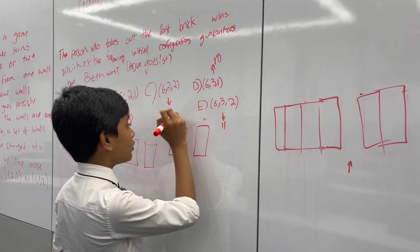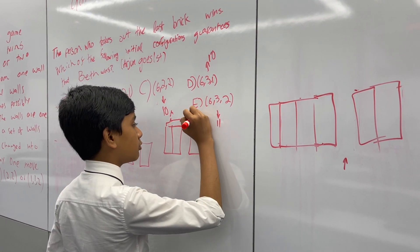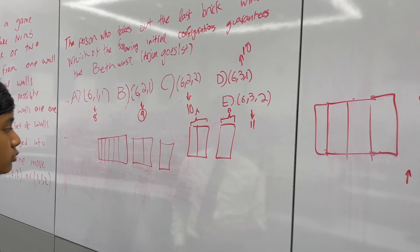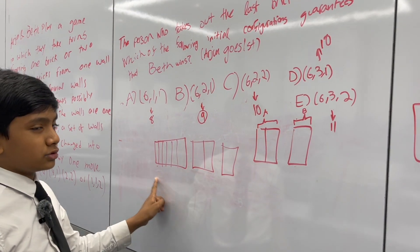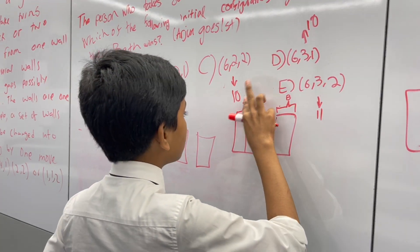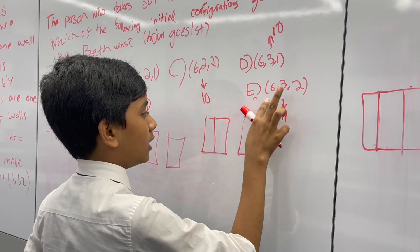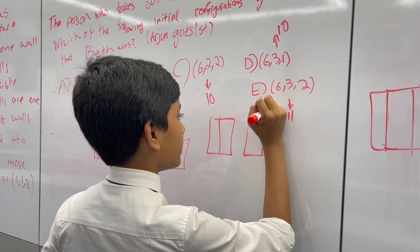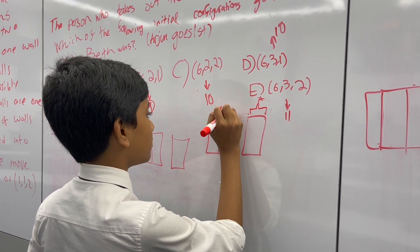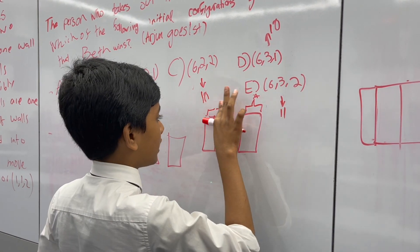Arjun at first is like, aha, I can take these two bricks. But then Beth takes this last brick, and then Arjun has to go first here, and he gives up. So then what does he do next? He takes out this brick, but then Beth takes out this, and Arjun has to go first there again.